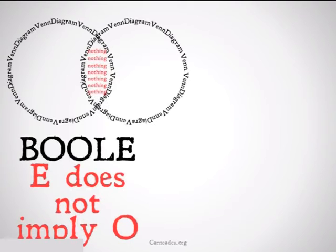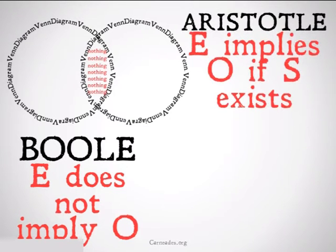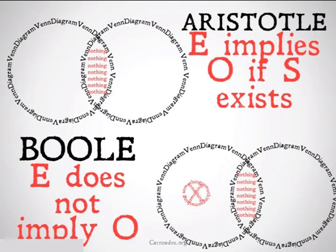This also applies with E and O statements. For Boole, E does not imply O — all we'll do is shade in that center part, not assuming the existence of the subject. Aristotle, on the other hand, E does imply O as long as S exists. So we're going to put an X with a circle around it on the subject side, as well as shading that middle area.